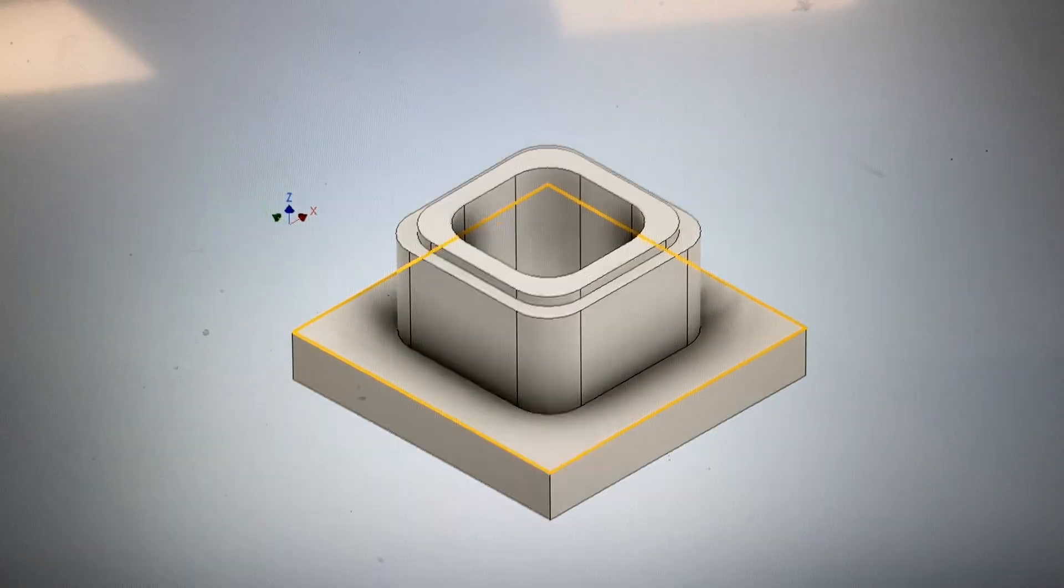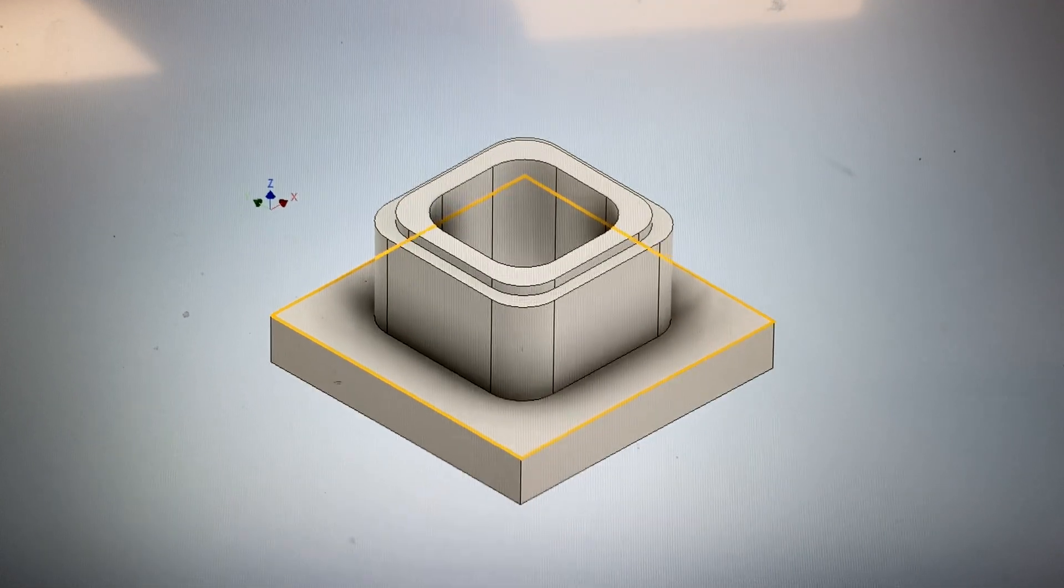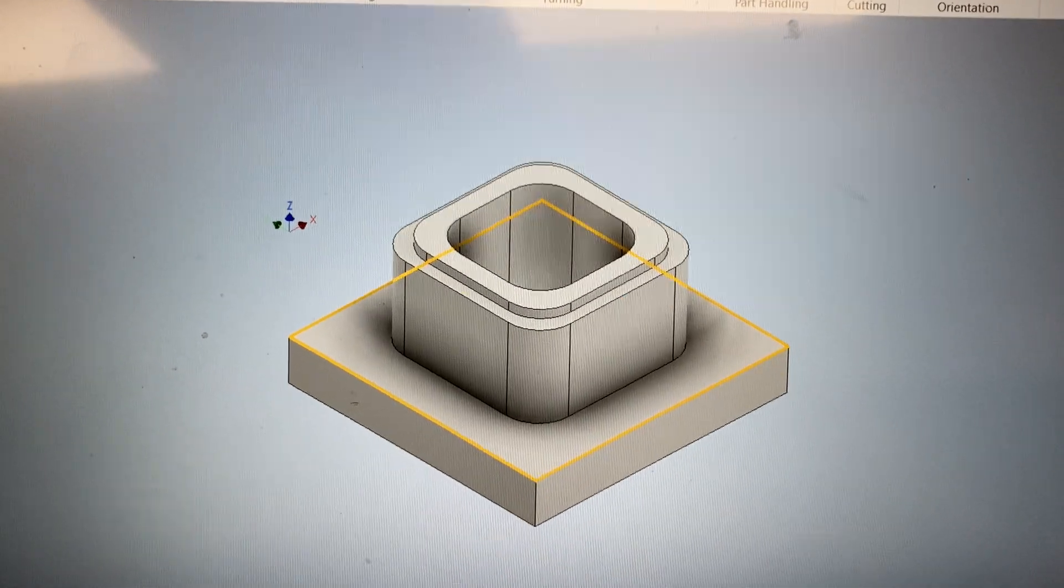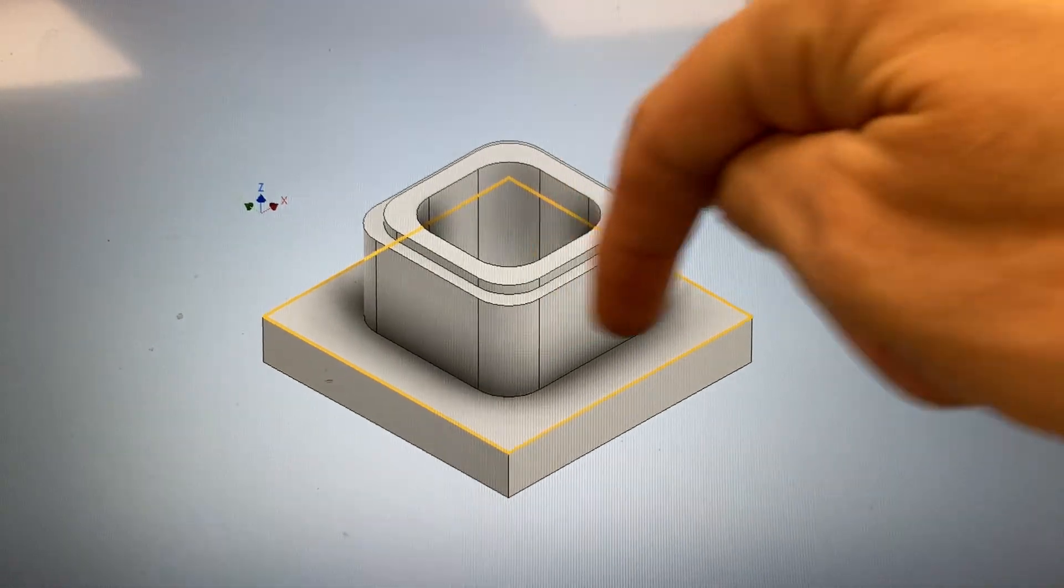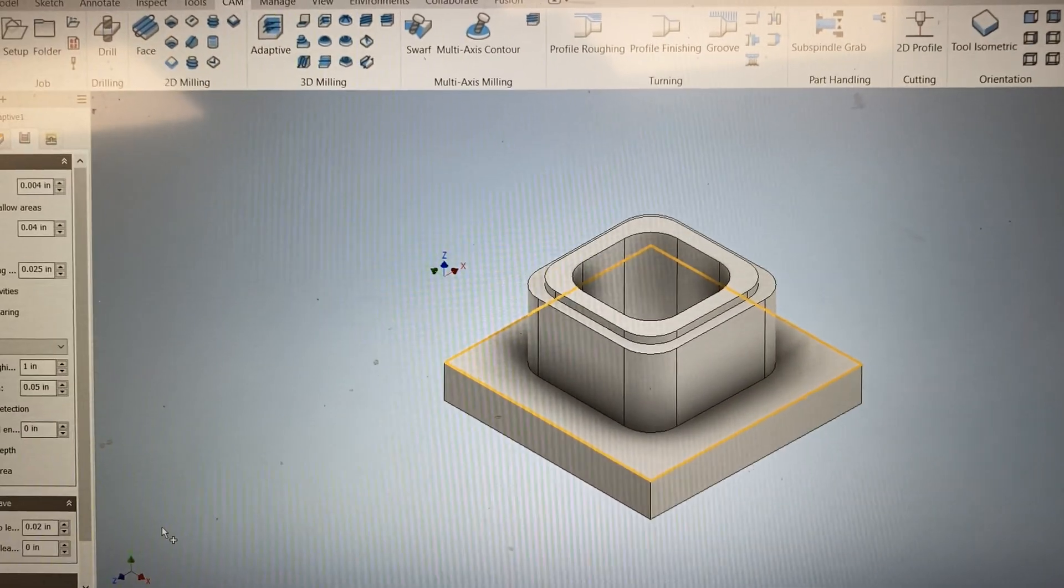And so this is where we are going to get into our final video for setting up our toolpath and creating our G-code, where we are going to contour these edges to make them come out nicely. So that's going to happen in our next video.